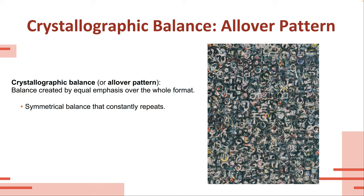Then we have crystallographic balance — essentially an all-over pattern that is generally repeated. It doesn't mean elements are exactly repeated throughout, but you'll see similar elements. In this case, there are these sweeping circular objects or elements, and even though they're not exactly the same and might be slightly different colors, there's a general sense of sameness throughout the entire piece. It's basically symmetrical balance that constantly repeats throughout an entire composition.